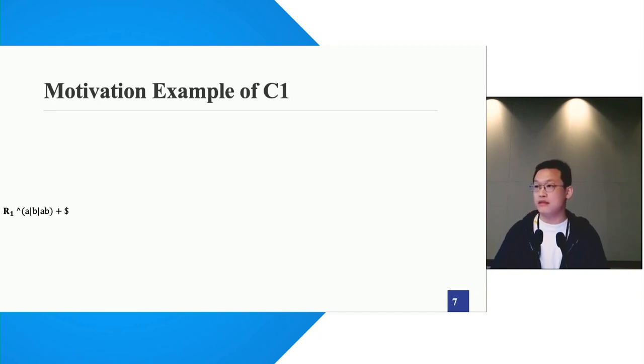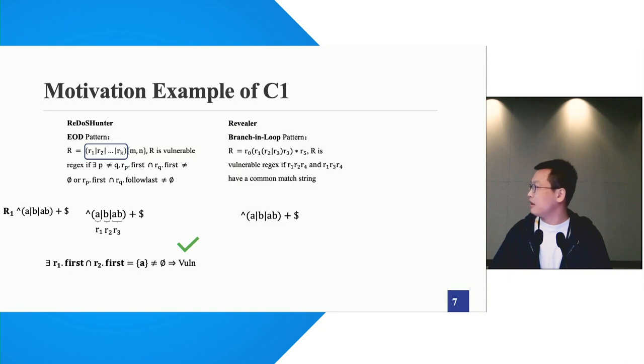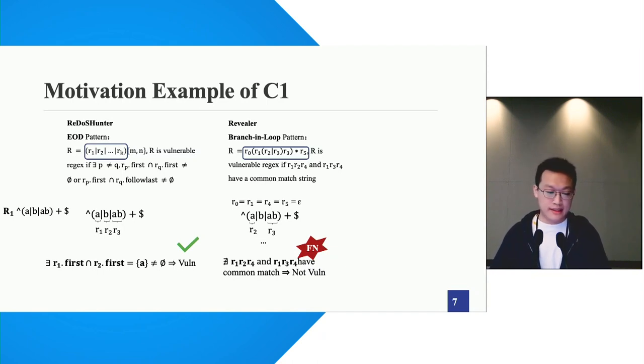Here is the example of the first challenge. The left side is a vulnerable target rejects R1, and the first two columns show the matching processes of two state-of-the-art tools. According to ReDoS Hunter's pattern, it first identifies three key sub-rejects, namely R1, R2, and R3. R1 is for A, R2 for B, and R3 for AB. According to its pattern, since the first letter of R1 is the same as the first letter of R3, it comes to a conclusion that this is a potentially vulnerable rejects. Similar matching processes also applies to another tool Rexplorer. However, it returns an incorrect result.